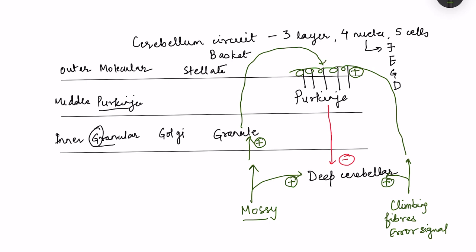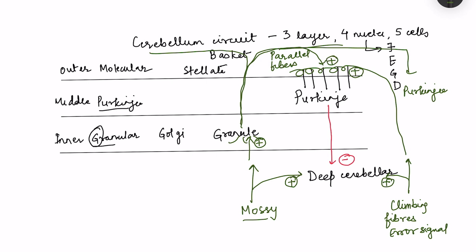Mossy fibers connect with the dendrites of granule cells, and the axons of granule cells bifurcate to form parallel fibers in the outer molecular layer. These parallel fibers then make connections with many Purkinje cells. Climbing fibers make connections with multiple dendrites of a single Purkinje cell, whereas granule cells connect with many Purkinje cells — both connections are excitatory. So mossy and climbing fibers excite the deep cerebellar nuclei and excite Purkinje cells; climbing fibers excite directly while mossy fibers excite via granule cells.